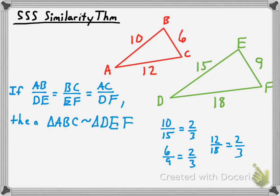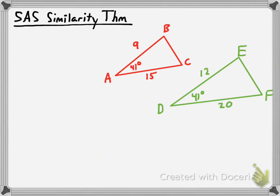You can show that all three pairs of sides are proportional to one another in order to prove that two triangles are similar. That's the SSS similarity theorem. Now, how about the SAS, or side-angle-side, similarity theorem?